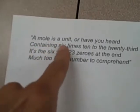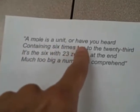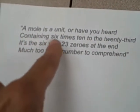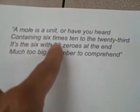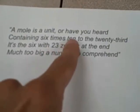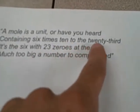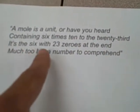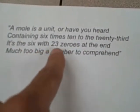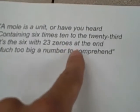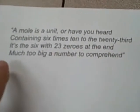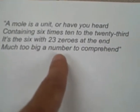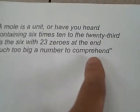A mole is a unit containing six times ten to the twenty-third — that's a six with twenty-three zeros at the end. It's much too big a number to comprehend.